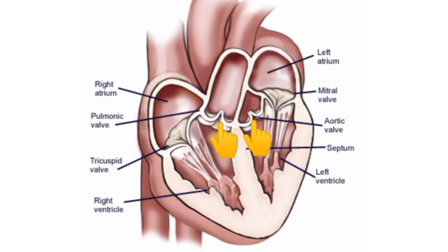The semilunar valves are present at the openings of the systemic aorta and pulmonary artery and are known as the aortic valve and pulmonary valve respectively. Because of their half-moon shape, these two valves are called the semilunar valves. They are each made up of three flaps. The semilunar valves open only towards the aorta and pulmonary artery and prevent the backflow of blood into the ventricles.